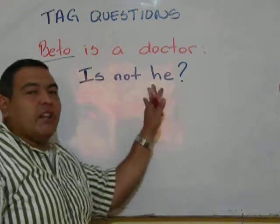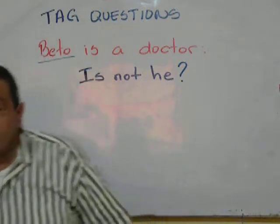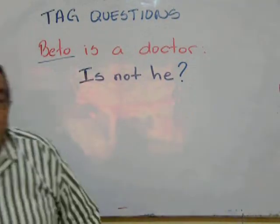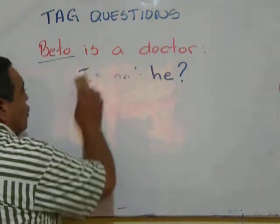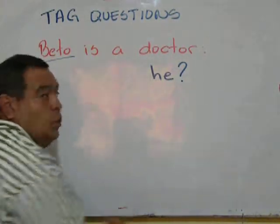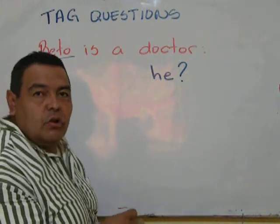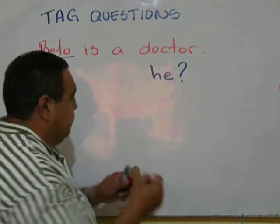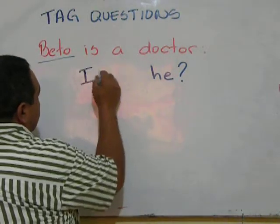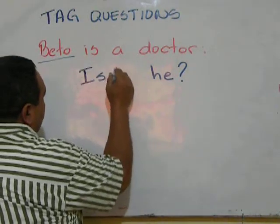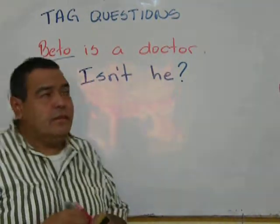But 'is not he' is not the correct way of saying it. We must contract it. So I'm going to say 'isn't he?'